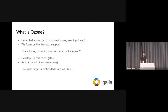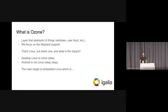So what's Ozone? It's the layer that abstracts the UI and its numerous objects like browser windows, cursors, UI events, keyboard input, and so on. And for those of you who have some idea what the UI looks like inside, Ozone is below Aura.